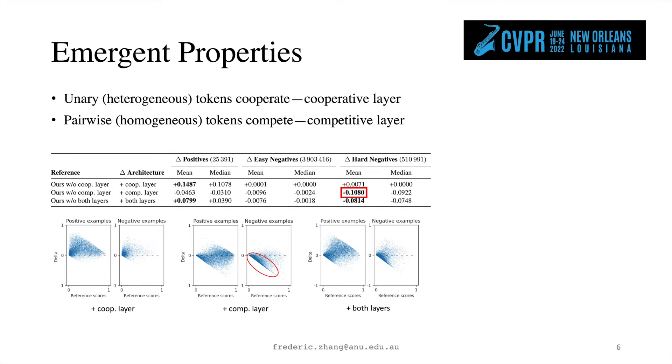For those with sharp observation, you might see that the competitive layer also reduces scores of positives moderately. This can in fact be compensated by using both types of layers together, where we see the model as a whole consolidating the positives while suppressing the negatives.